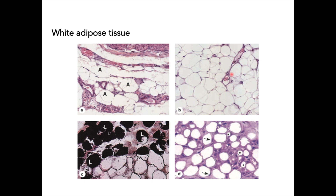Blood vessels — capillaries — are important here because lipoproteins travel through them. When energy is needed, triglycerides are broken down to release fatty acids. The lipid droplets are dissolved during tissue processing, so special stains such as osmium tetroxide are needed to stain lipids. Other fat stains include Sudan black.